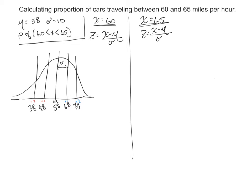In this video, I'm going to show you how to calculate a proportion of cars traveling between two scores, or between, in this case, 60 and 75 miles per hour.